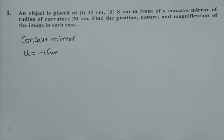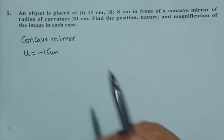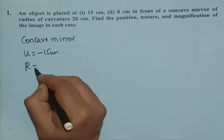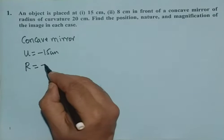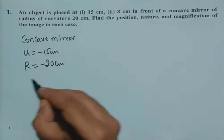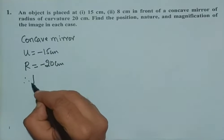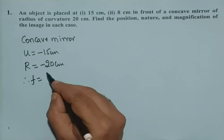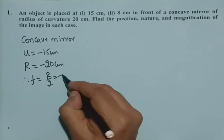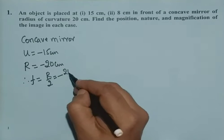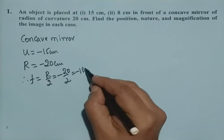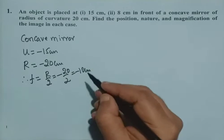Radius of curvature R equals minus 20 cm. Therefore, F can be written as R by 2, which is minus 20 by 2, which is minus 10 cm.